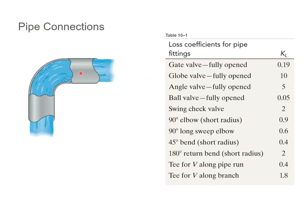Also for pipe connections like gate valves, globe valves, angle valves, ball valves, swing check valves, there's different values of K sub L for each of those situations.